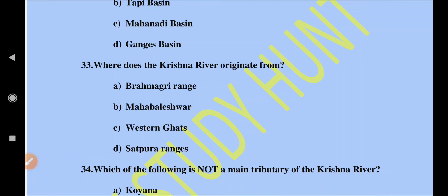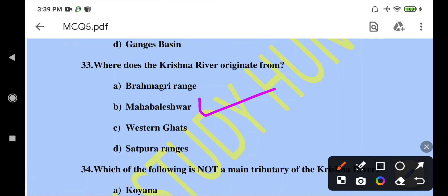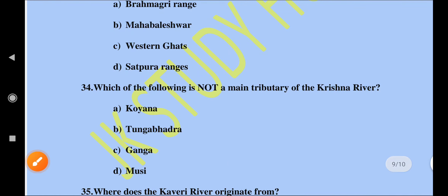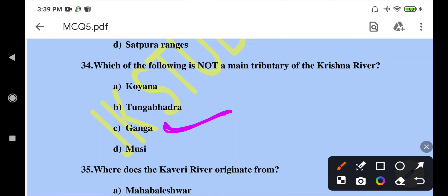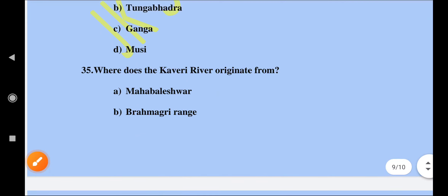Question 33: where does the Krishna River originate from? The Krishna River originates from the Western Ghats, near a town called Mahabaleshwar. So option B is the right answer — it originates from the Western Ghats near Mahabaleshwar. Which of the following is not a main tributary of the Krishna River?